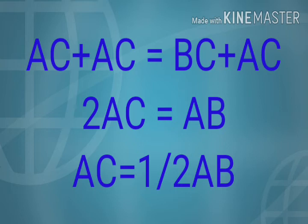According to the question, we can add AC or BC. If the question asked to prove BC equals half AB, then we would add BC on both sides. But here the question asks to prove AC equals half AB, so we add AC on both sides. We got 2AC equals AB and AC equals half of AB.